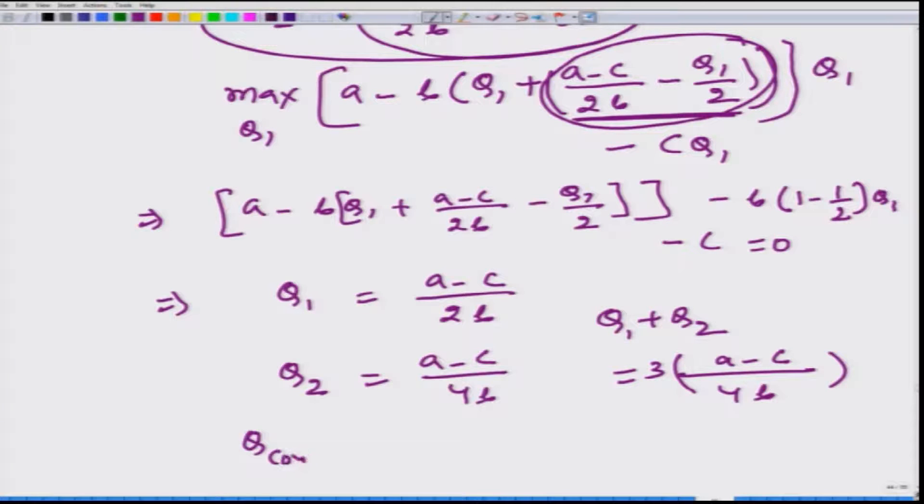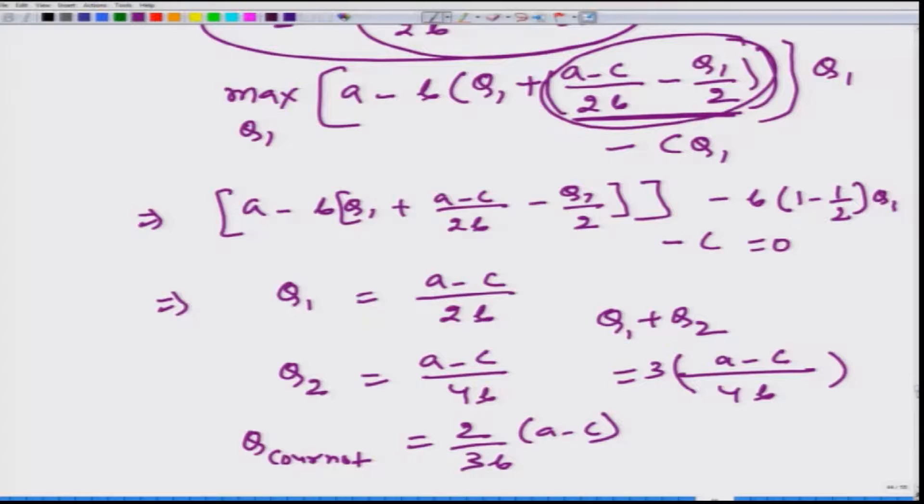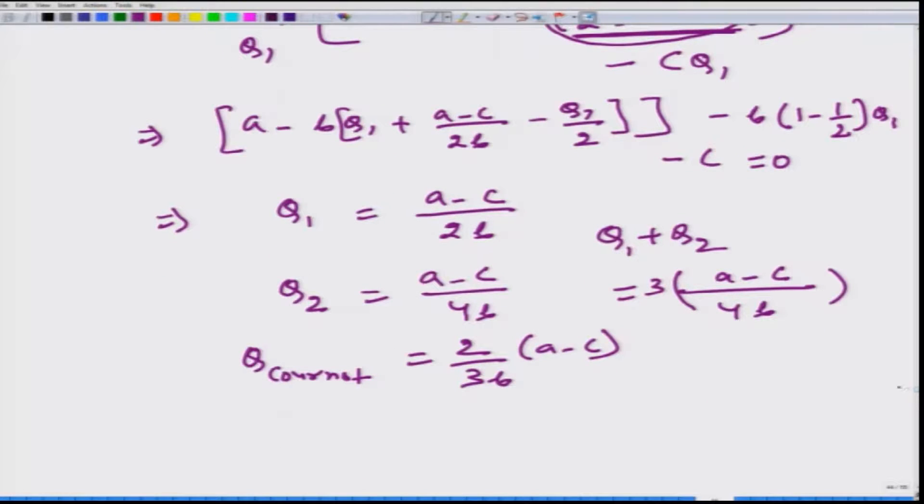Because we see in the Cournot, Q Cournot is 2/3B(A minus C). So the level of production goes up from the Cournot in the Stackelberg setting.